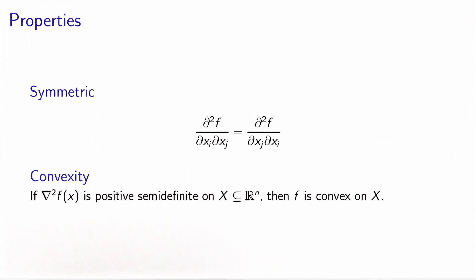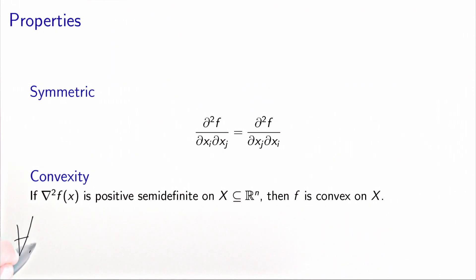Another important property of the second derivative matrix is that it gives us information about the convexity of the function as well. In particular, if the second derivative matrix is positive semi-definite on a subset X of R^n, then it means that the function f is convex on this set. So as a reminder, we will say that a matrix is positive semi-definite if for all d...